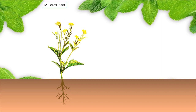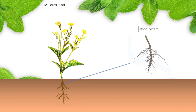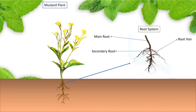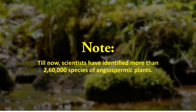A system below the soil is called the root system, and it consists of the main root, secondary root and the root hairs. Note it down — till now scientists have identified more than 2,60,000 species of angiospermic plants.